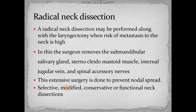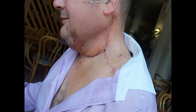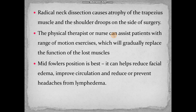We can also do selective dissections, modified dissections, conservative or functional neck dissections. This picture shows the incision after the surgical procedure. Due to this surgery, major portions are removed — the trapezius muscle which supports the shoulder will undergo atrophy, so drooping of the shoulder to the affected side may be seen in some persons. The physical therapist or nurse can assist patients with range of motion exercises as soon as possible after surgery, otherwise the function of the lost muscles cannot be regained.